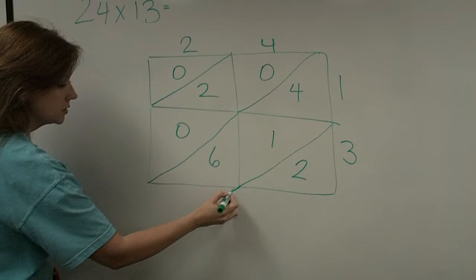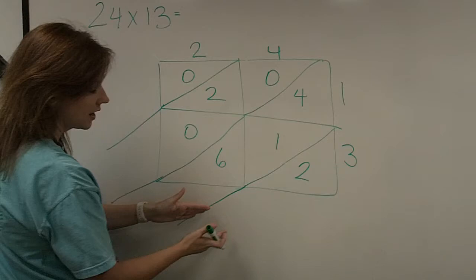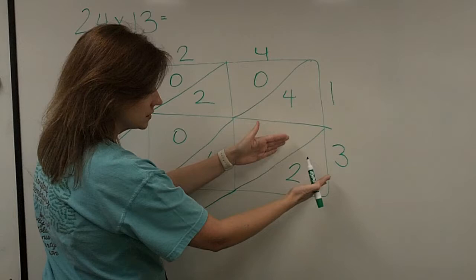Now, the next step is to extend the lattice work outside of the box. So, I tell the students to just keep drawing the lines out like that. Now, this is where it gets crazy, parents. You can actually start in this bottom right corner and add on a diagonal. Everything in the box in that diagonal gets added.